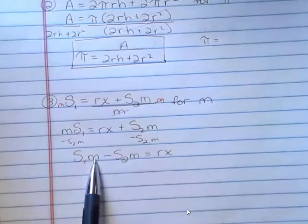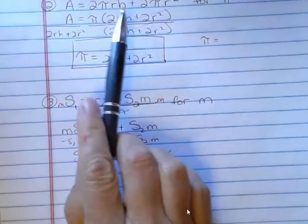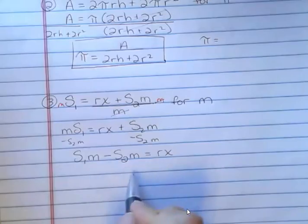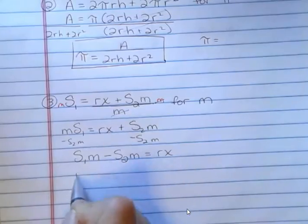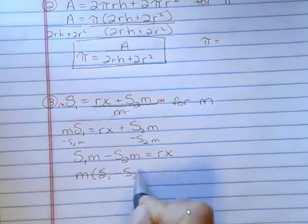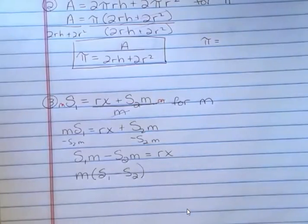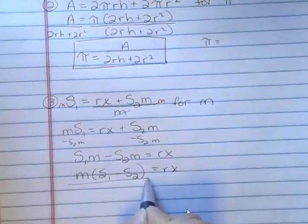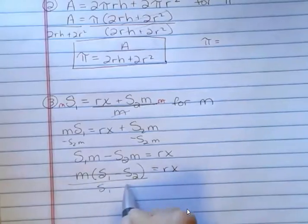And now I've got m on the same side like I had up here. I have them twice. I want to get that in one place, so I'm going to factor out the m. That's going to leave s sub 1 minus s sub 2. Those are two different values. That's why they're given different subscripts. And now I'm going to divide both sides by s sub 1 minus s sub 2.